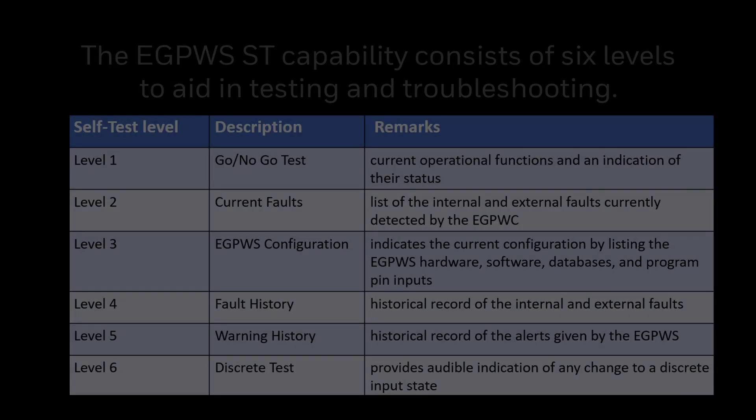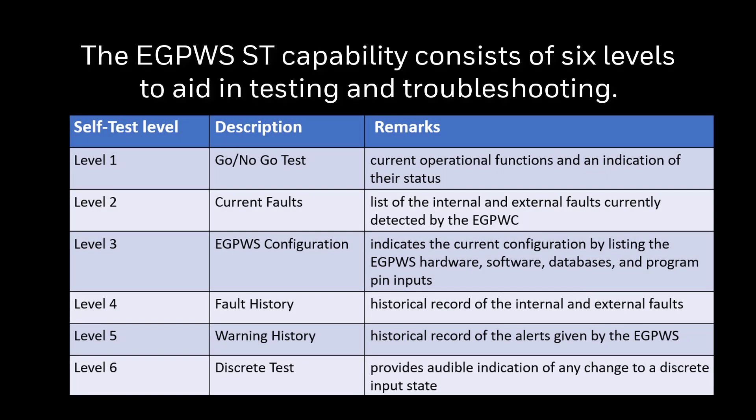For example, the SD function can be started when the GPWS pull-up indicator is pushed, or when a separate SD switch is pushed. The EGPWS SD capability consists of 6 levels to aid in testing and troubleshooting.